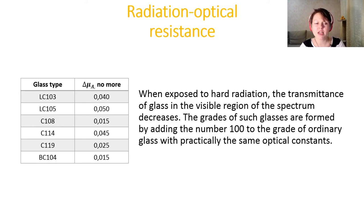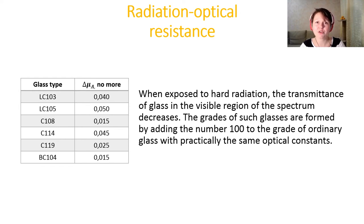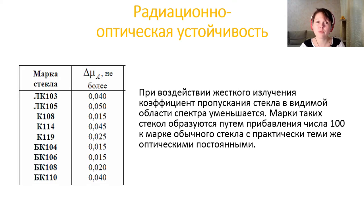There are several properties that are very important for glasses and are also standardized. The first is radiation optical resistance. When glass is exposed to hard radiation or ultraviolet radiation, its transmittance in the visible region decreases. That is why several types of radiation optical resistant glasses were synthesized, and here you can see several types of them and the changes in optical transmittance while irradiating with hard radiation.